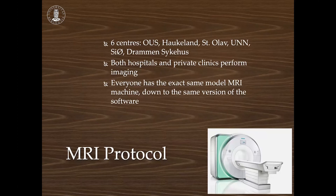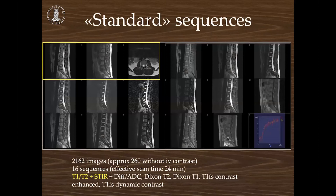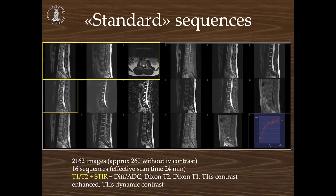The standard sequences taken include T1 and T2 sagittal and T2 axial images in the yellow box for a lumbar spine. We also included STIR, which shows edema in bone marrow and muscles. In addition, we took diffusion images, T1 and T2 Dixon images, contrast images, and dynamic contrast images, amounting to over 2,000 images in total — about 1,800–1,900 of which are dynamic contrast images. The protocol takes about 45 minutes for the patient.